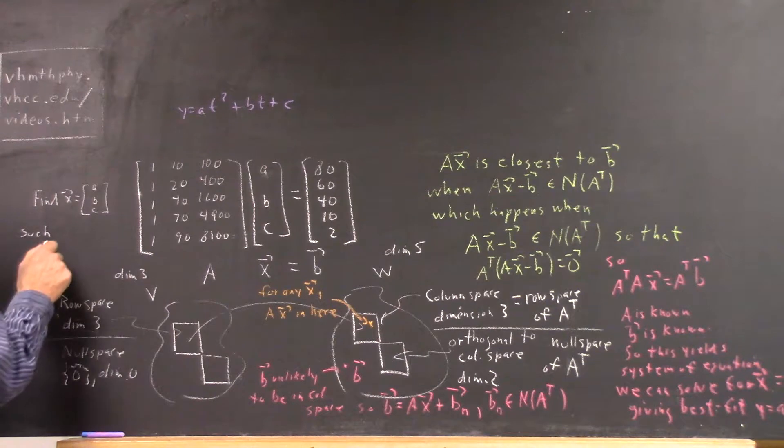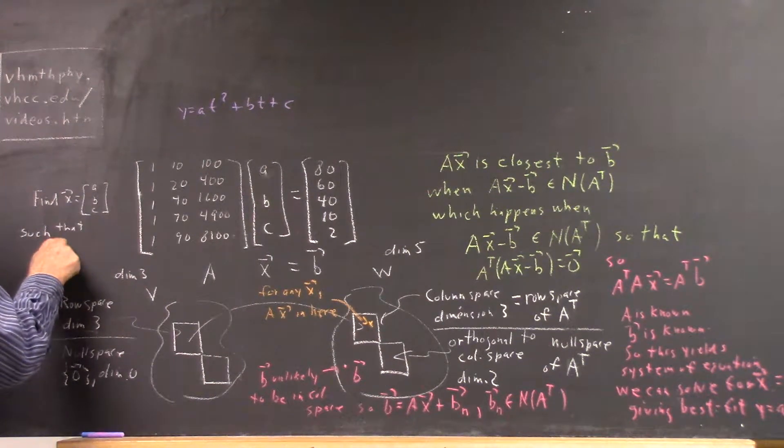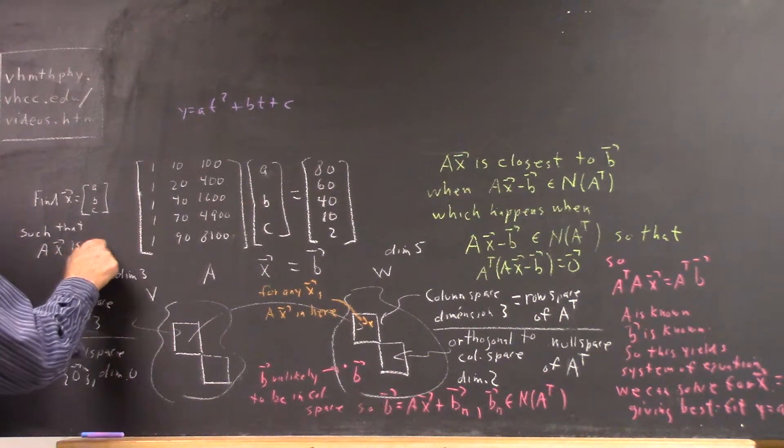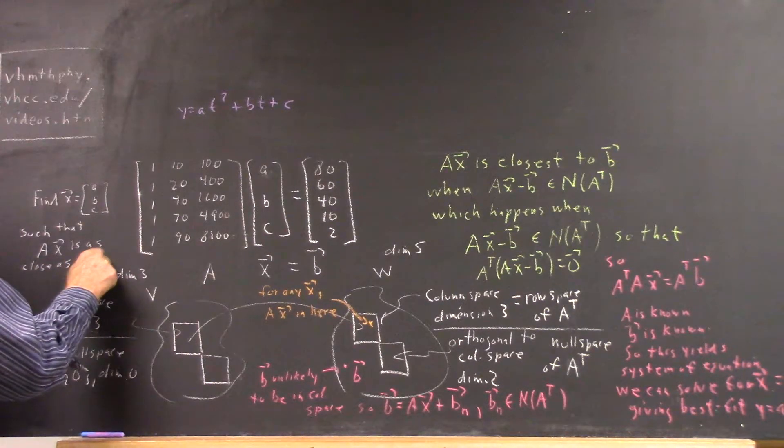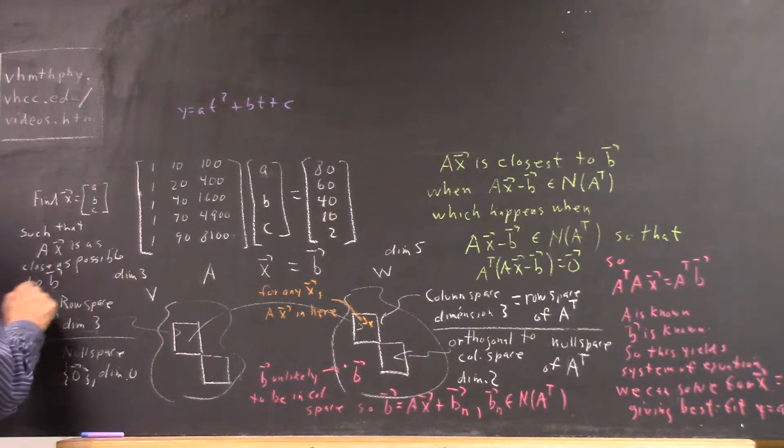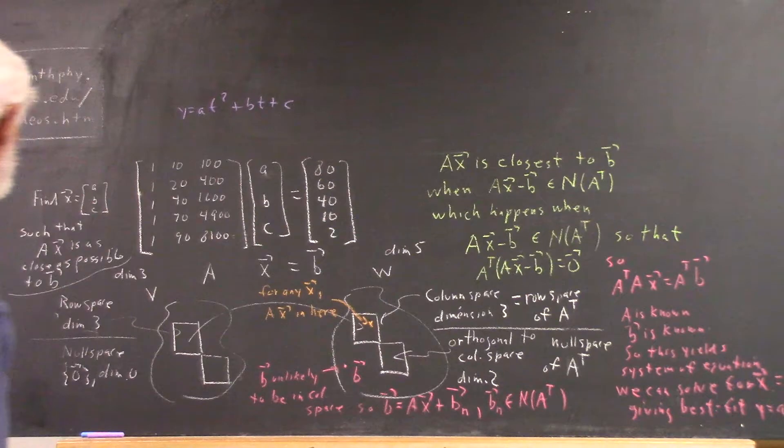the X, which is an ABC, such that the matrix times X is as close as possible to B. And what's B? Well, B is just a set of Y values.